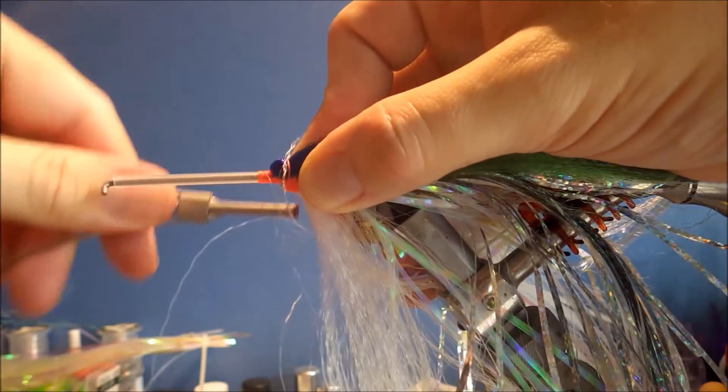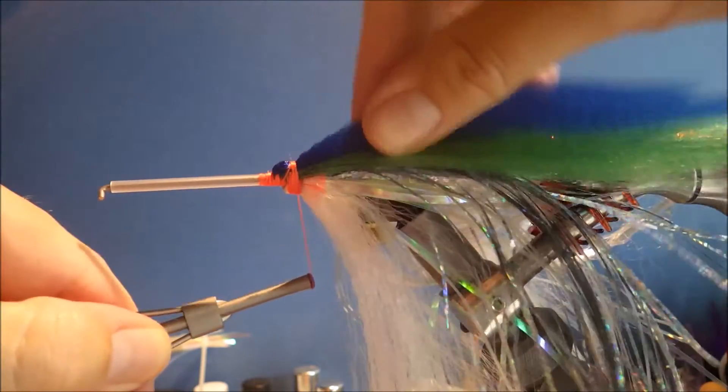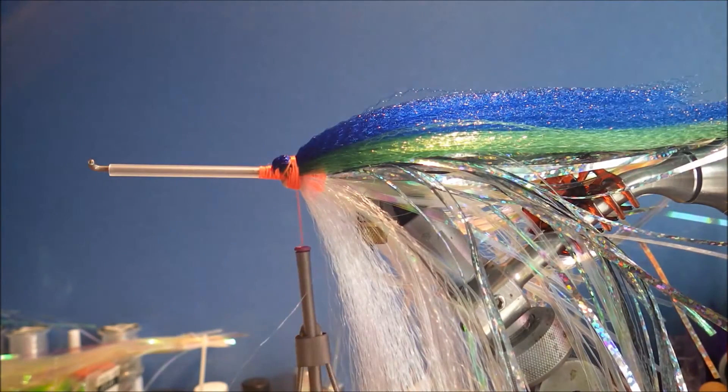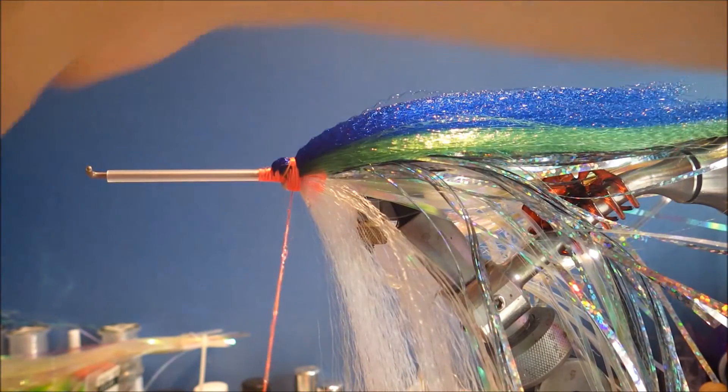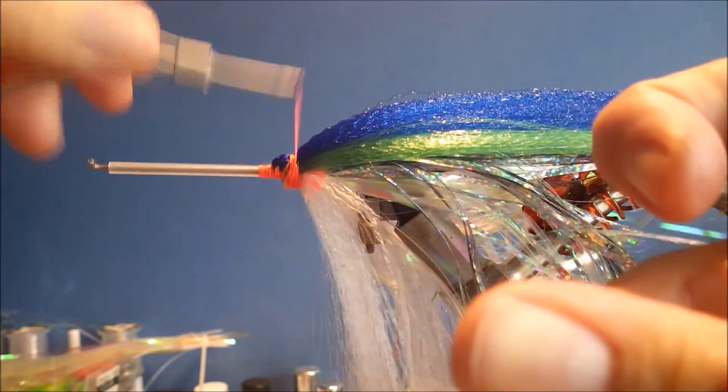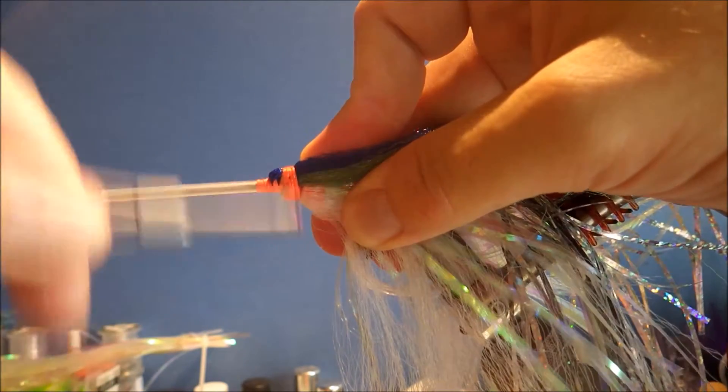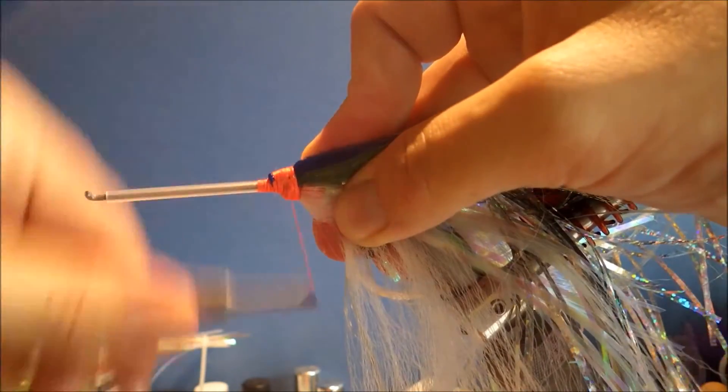And then it's just a case of folding it back over again. Keep it on top. That sort of gives you that nice baitfish profile. Don't worry about this. I know it doesn't look very good, but this will all be tidied up. Again just some super glue. It just stops anything slipping. These materials are nice and really slick, so the superglue helps prevent your thread from slipping.